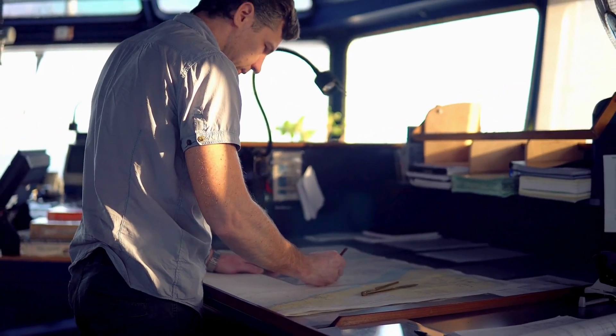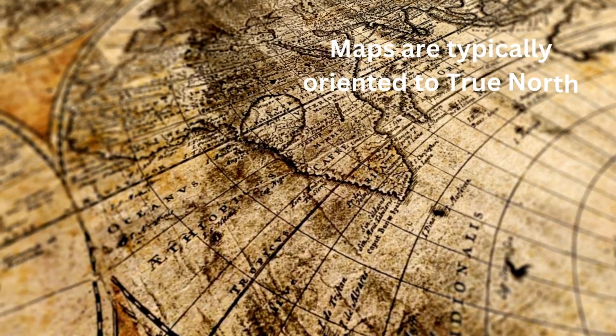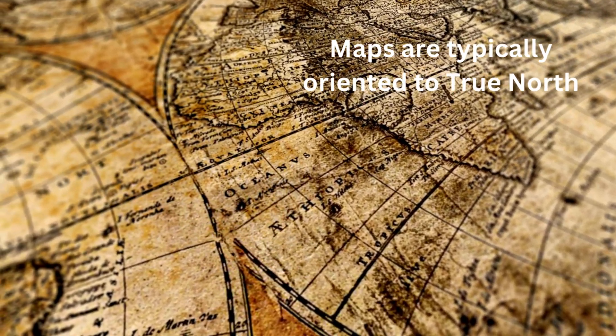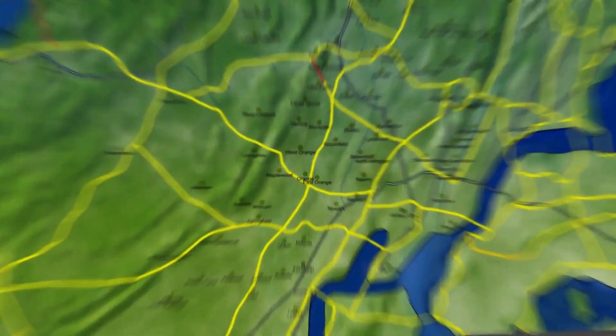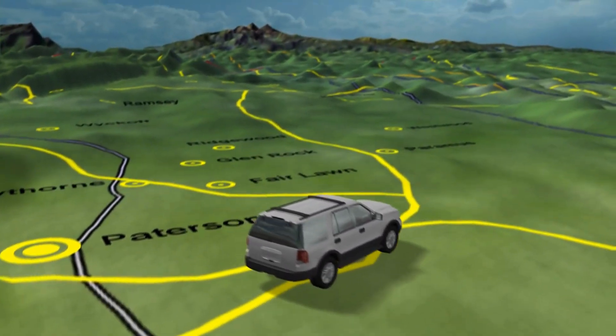True north in mapping. Maps are typically oriented to true north, which helps provide a consistent frame of reference for navigation. When using GPS, you're relying on true north for accurate positioning.